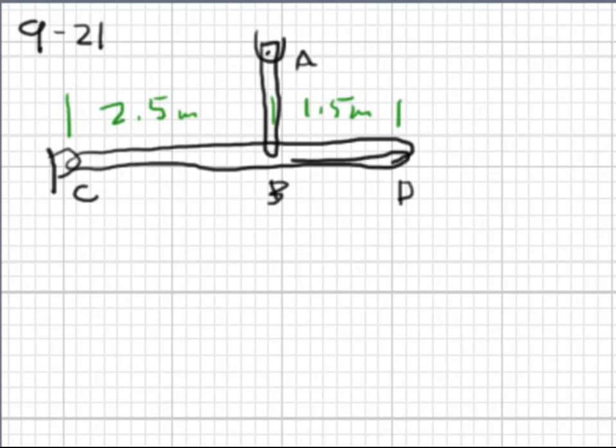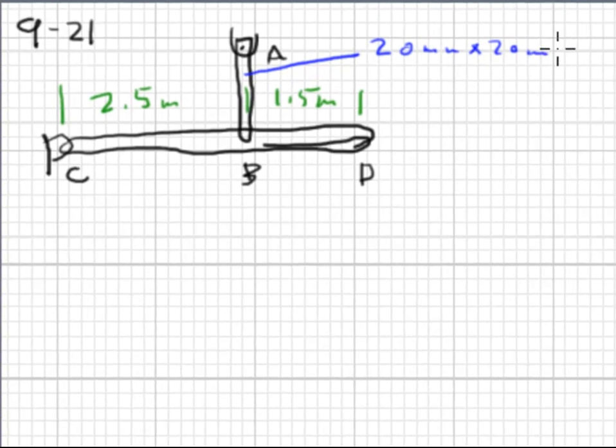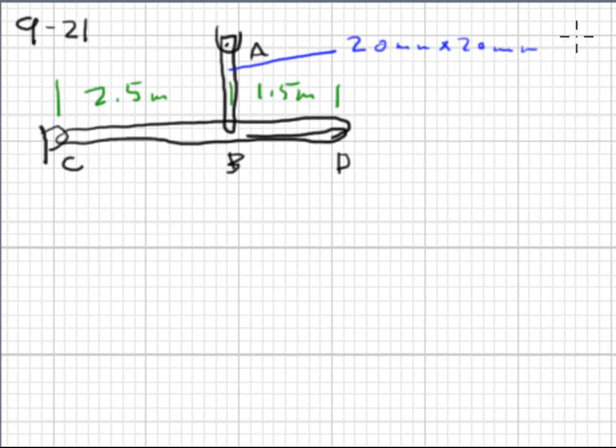It is also given that tension member AB is a 20 millimeter square. And that is assumed to be a bar. The load at point D is 12.5 kilonewtons.